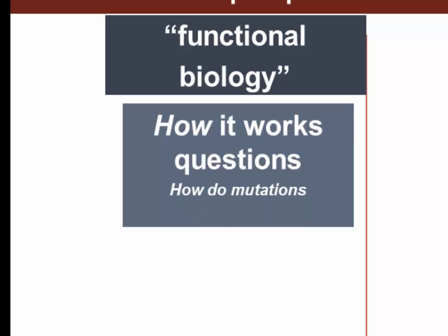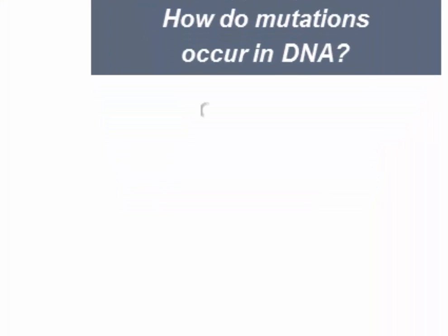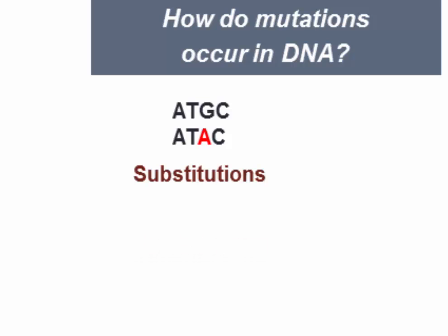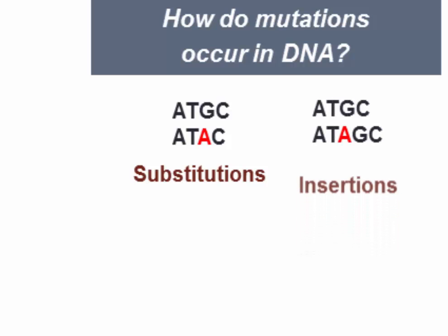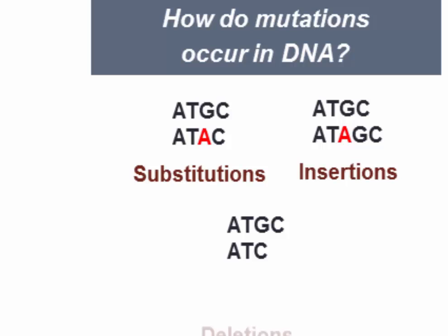For example, a functional biologist might be interested in: how do mutations occur in the code of DNA? A variety of mechanisms have been identified. You can have a substitution, where one nucleotide is substituted for another — in this case adenine substituted for guanine. You can also have insertions, where an additional nucleotide is inserted into the code, such as adenine being inserted. And you can have deletions, such as guanine being deleted. Those are examples of a functional explanation of how mutations happen.